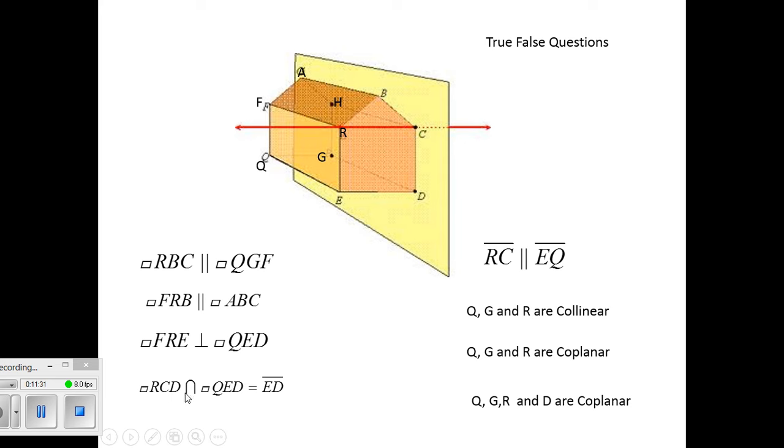And that's what this one is asking. This symbol is for intersection, which is asking, do the plane contain, does the plane RCD, the plane containing those three points, RCD, you've got to envision where RCD is, which is the front part of this house shape. Does that plane intersect with QED, which is basically the floor, at this line ED, or segment ED? Yes, it does.